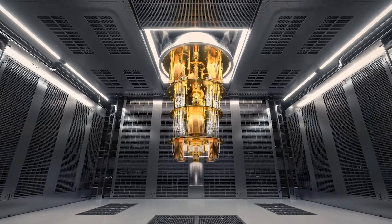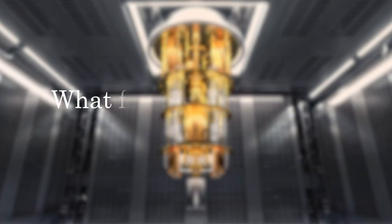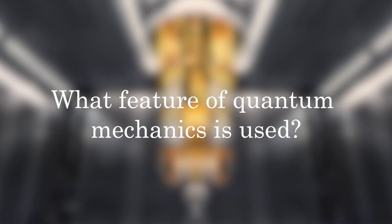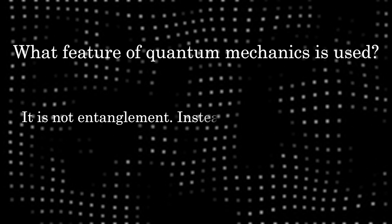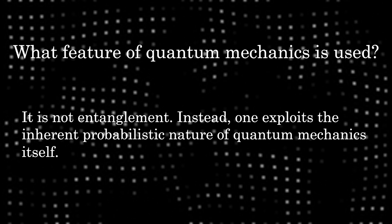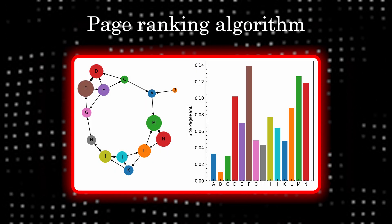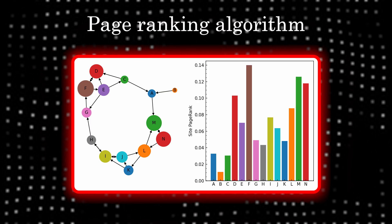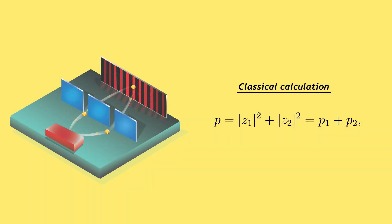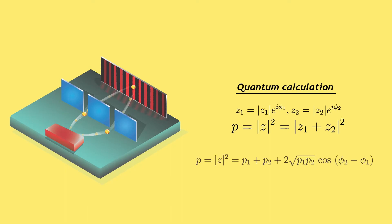In the same spirit, quantum computation is about using the laws of quantum mechanics to construct a new kind of computing machine. What features of quantum mechanics are used? It is not entanglement. Instead, one exploits the inherent probabilistic nature of quantum mechanics itself. Even our day-to-day classical algorithms, from YouTube's recommendation system to Google's PageRank, make use of probabilistic reasoning. However, the probability in quantum mechanics is slightly different — more general — than the usual probability law, and this is exploited by a quantum computer.